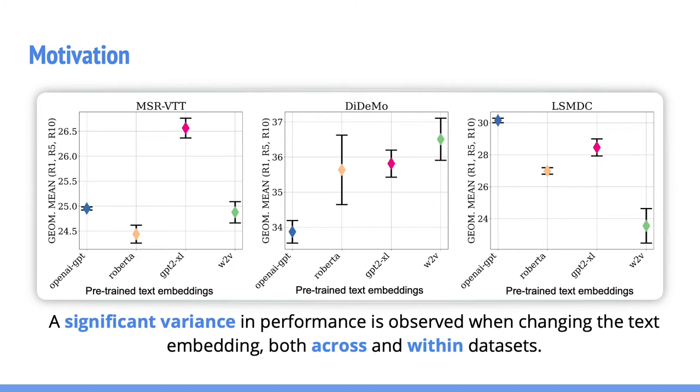However, what is the intuition behind our approach? From this extensive study, we have shown that the retrieval performance varies drastically when changing the pre-trained text embedding. Let's take, for example, the LSMDC dataset. A gain of more than 6% can be obtained just by choosing to use the OpenAI GPT instead of Word2Vec. Moreover, we can observe the opposite for DiDemo dataset, where the performance drops when using OpenAI GPT. Overall, from our experiments, GPT Excel was the most robust text embedding. The variance in performance both inter- and intra-datasets suggests the presence of complementary information among different text embeddings. This justifies the idea of using more than one text embedding for this task.